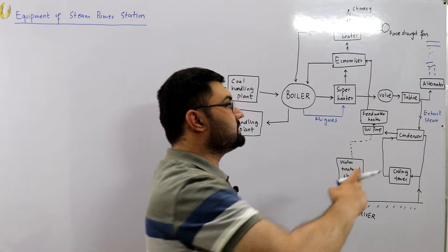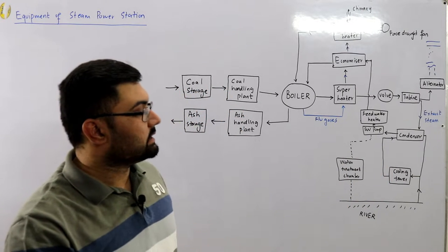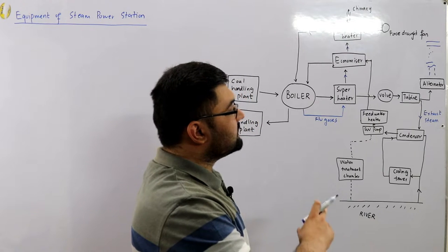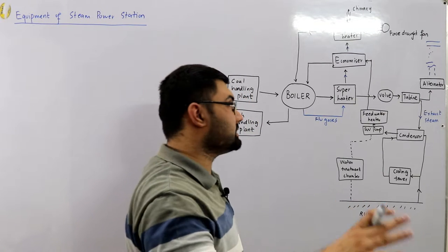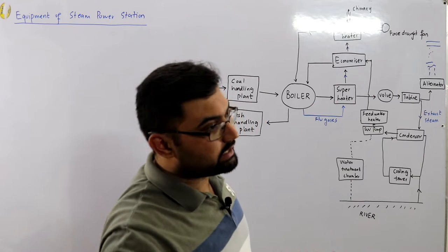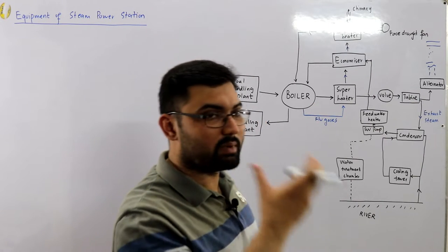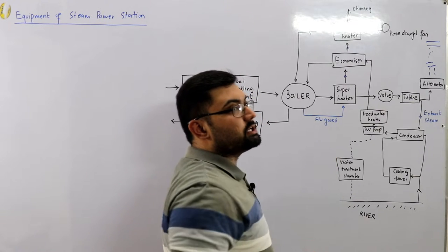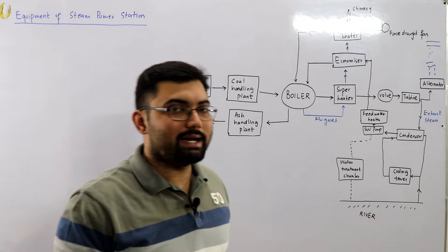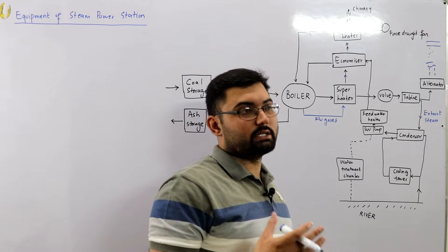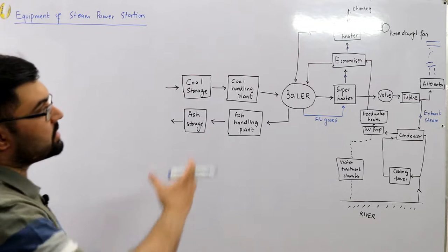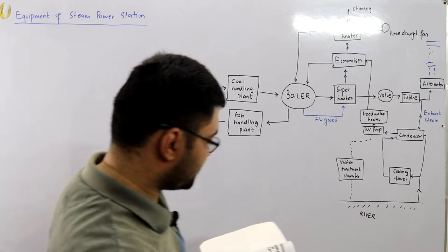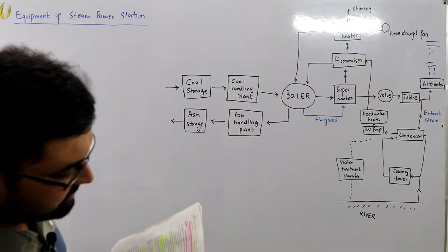A valve regulates the flow of steam to the turbine. The exhausted steam goes to the condenser where it is condensed back to water. The river provides makeup water for losses. The condensed water, called feed water, is fed back through the economizer via the feed water pump. A feed water heater is also on the way. A water treatment chamber removes impurities, dissolved gases, and marine life. A forced draft fan provides the air required for the combustion process.